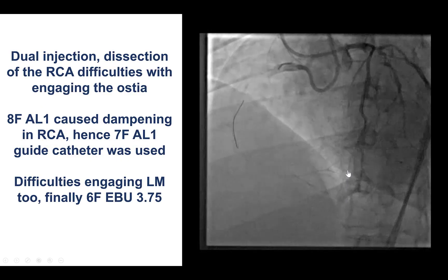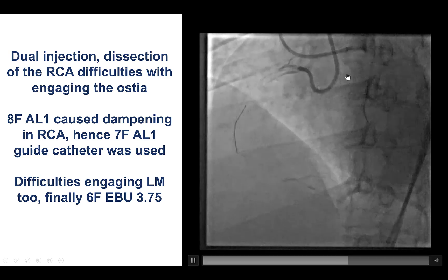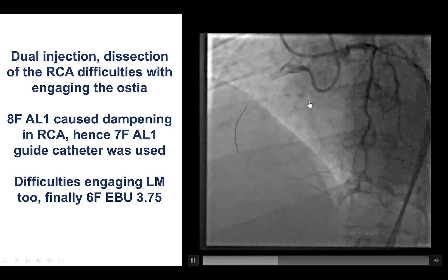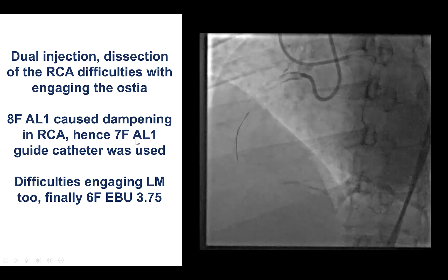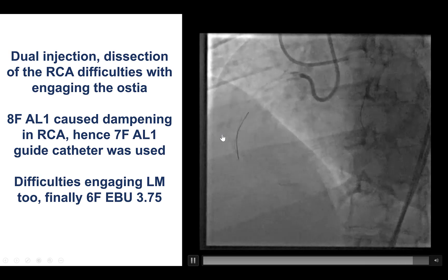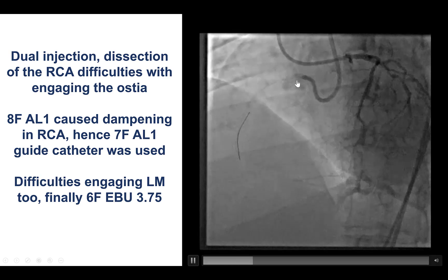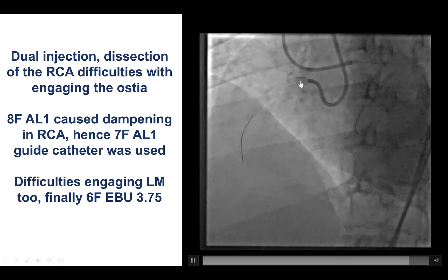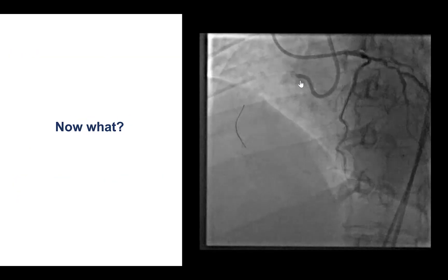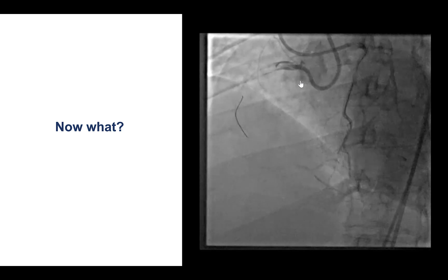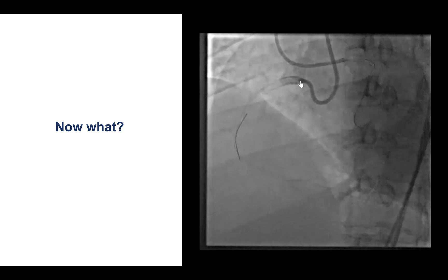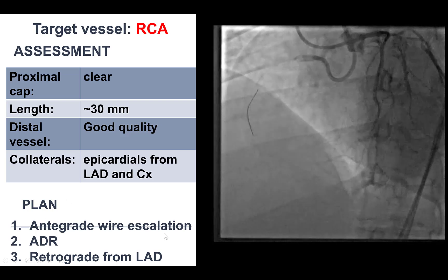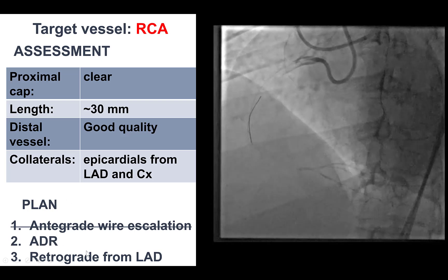We then had significant difficulty engaging the right coronary artery. An Amplatz 2 8 French guide caused significant dampening and was removed, and then we wired the RCA. We engaged the right coronary artery with a 7 French AL1 guide catheter and used a workhorse guidewire. However, unfortunately, the first injection demonstrates that we have an ostial dissection of the right coronary artery. This is a significant change in plans, because now that we have dissected from the ostium, it is often very hard or even impossible to advance antegrade wires into the proximal true lumen. So the plan changes into using antegrade dissection re-entry and retrograde.